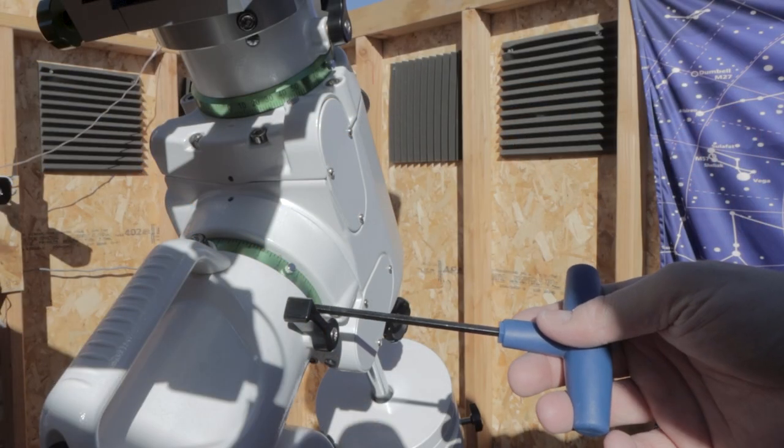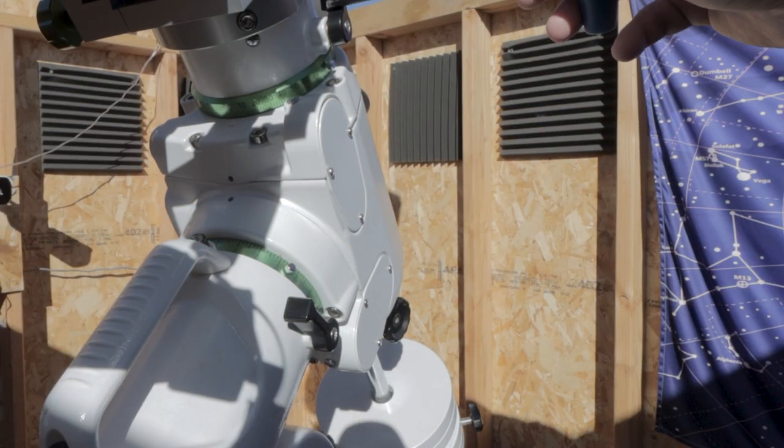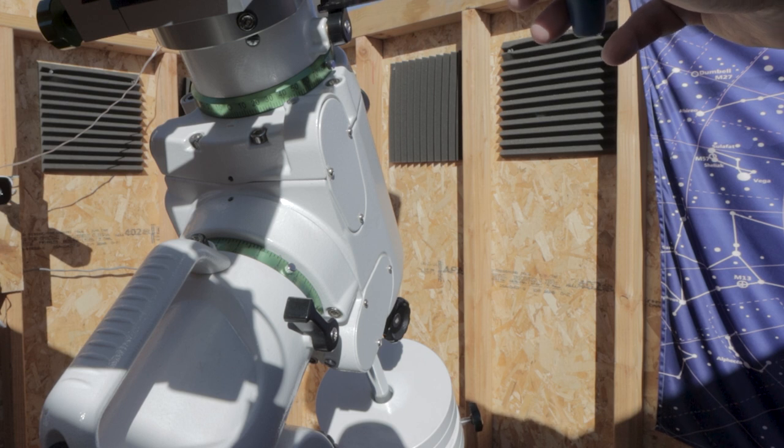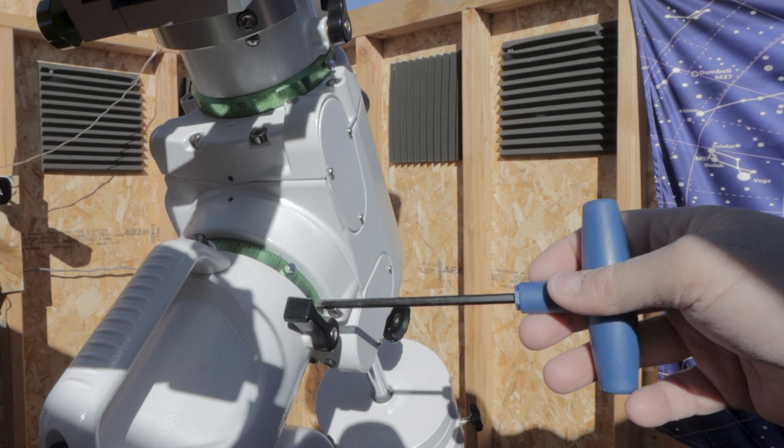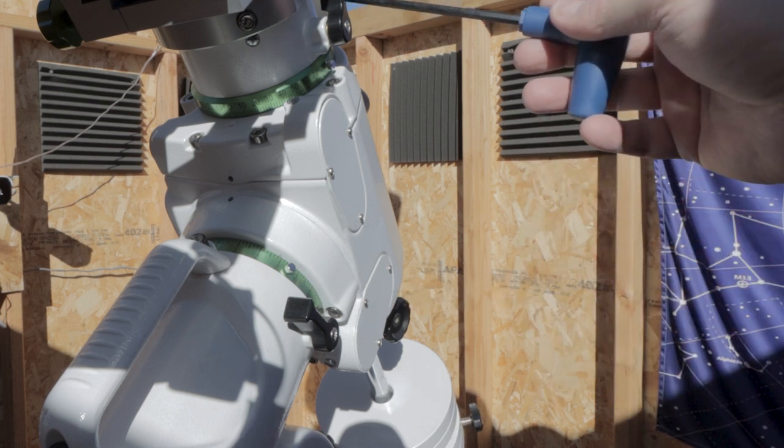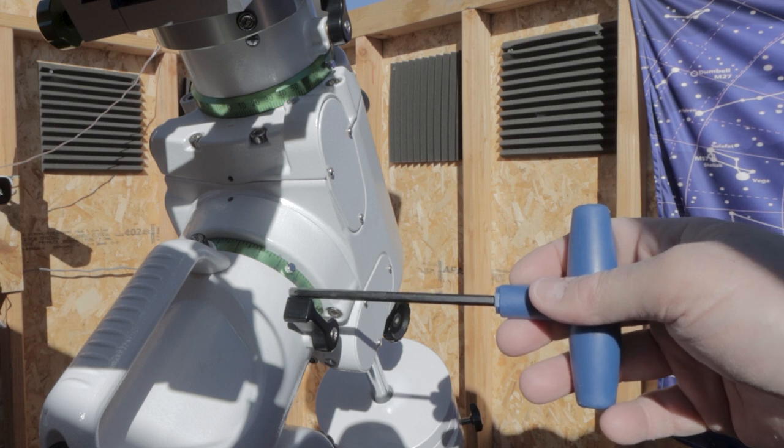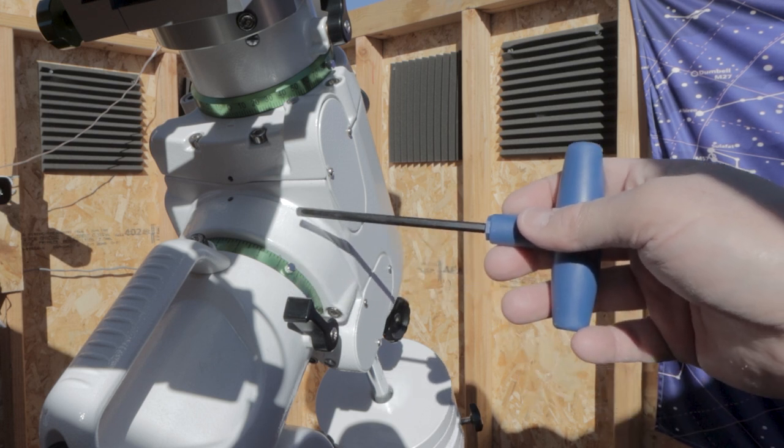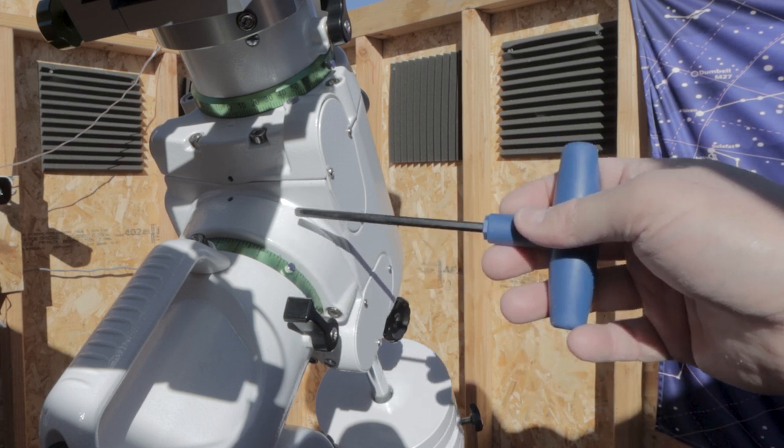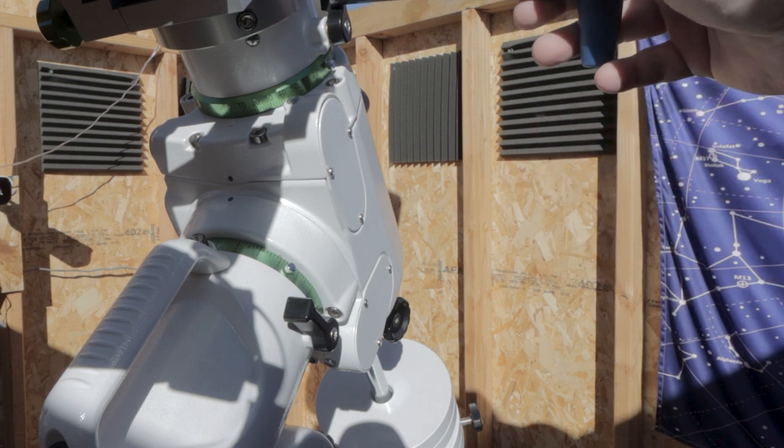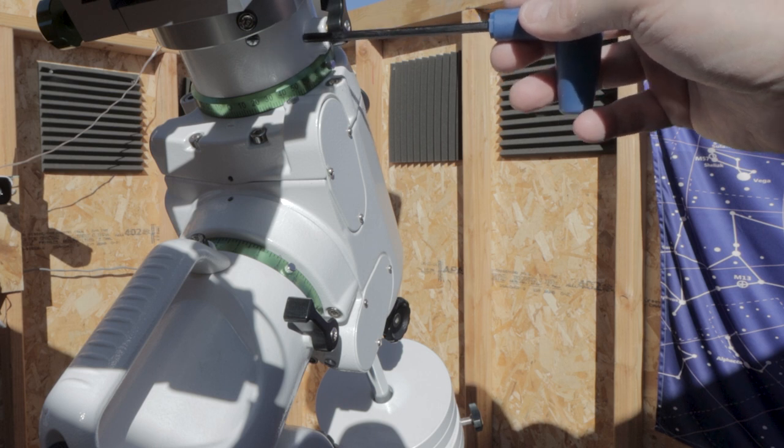So here's your clutch for your right ascension axis and here's the clutch for the declination axis on an EQ6R Pro mount. What you don't want to do is over tighten these. And you might find that you have a feeling like you need to over tighten them to keep the most likely the RA from moving.